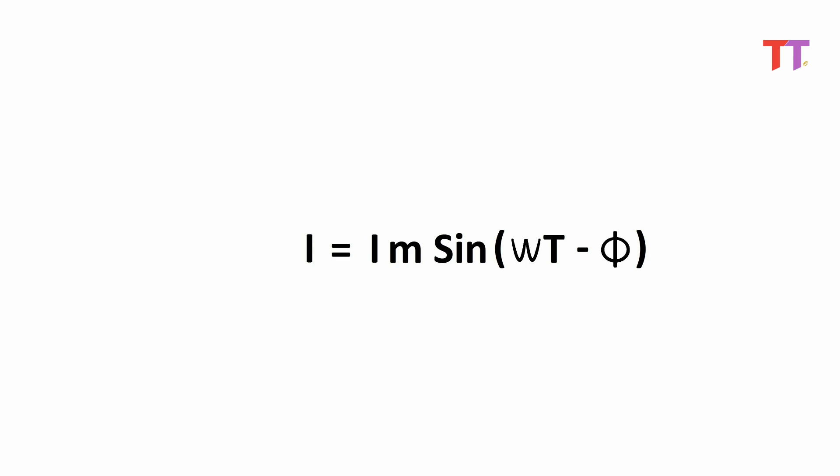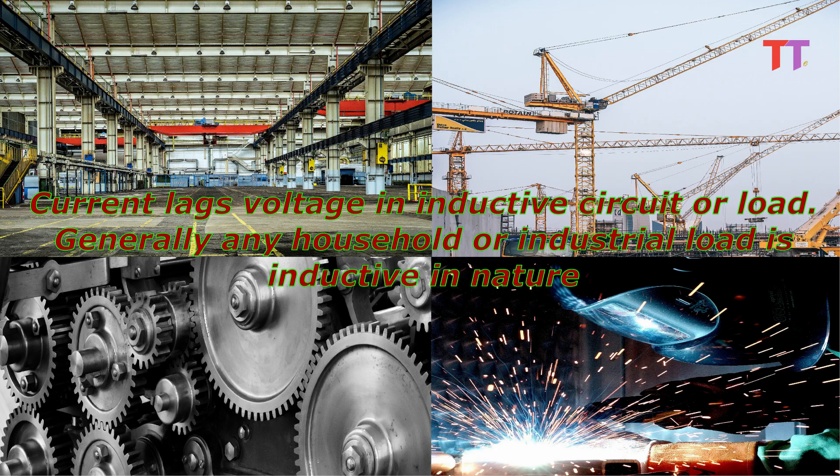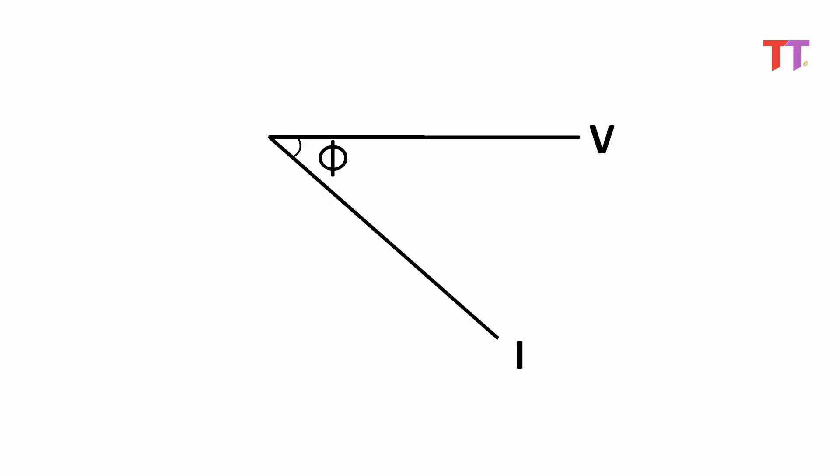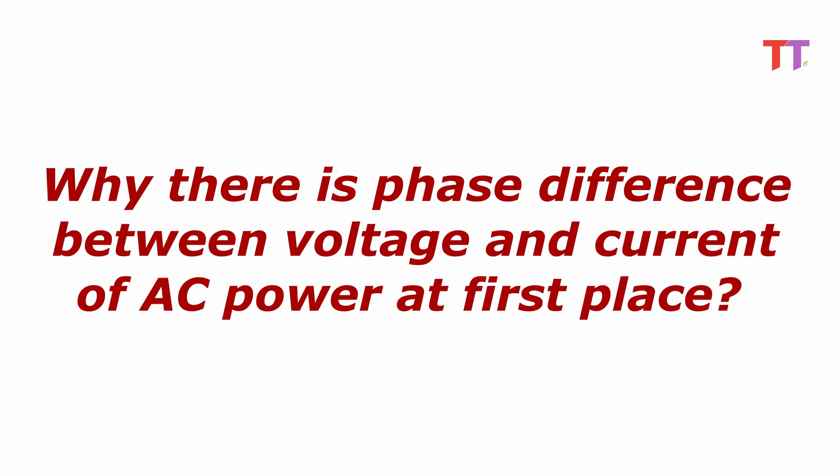Case three: current lags voltage. This means phi is negative. Hence the equation of current is i equals Im sin(omega t - phi). Current lags voltage in an inductive circuit or load. Generally any household or industrial load is inductive in nature. This is how the phasor diagram looks like for current lagging voltage.